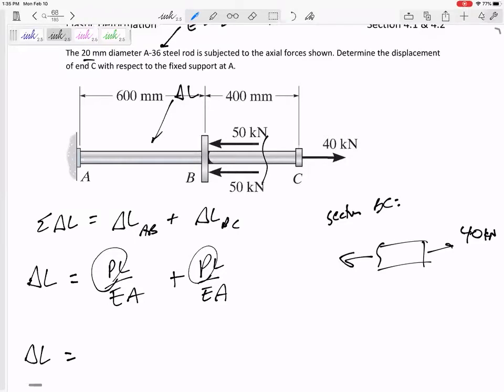I cut it open. I've got 40 kilonewtons right here. So summing the forces in X equals zero, I would get 40. So that force, would it be positive 40 kilonewtons or negative 40? It would be in tension. That would be positive 40 kilonewtons.